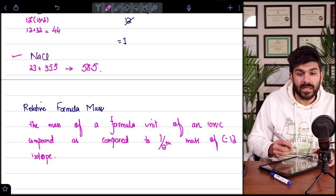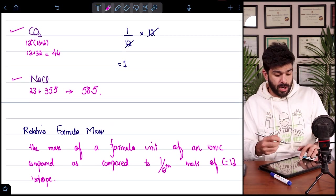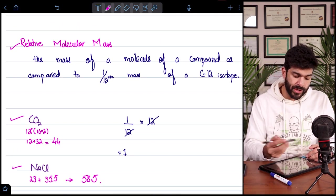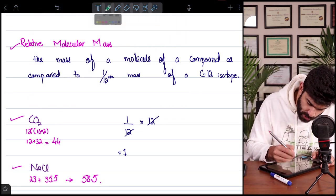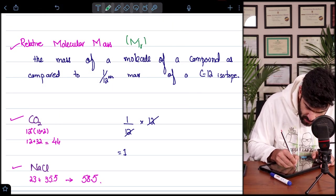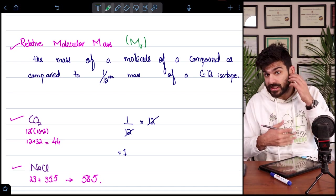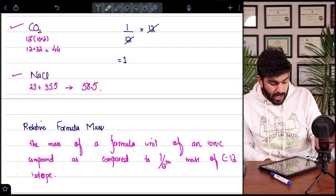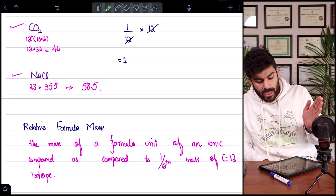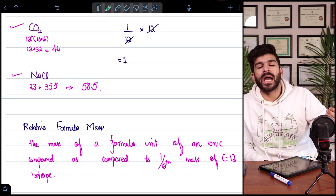So this is just a simple differentiation that for covalent compounds, we use the term relative molecular mass, which is also denoted by the term MR. So this MR is very important in the coming formulas. And likewise, relative formula mass is for the ionic compounds.